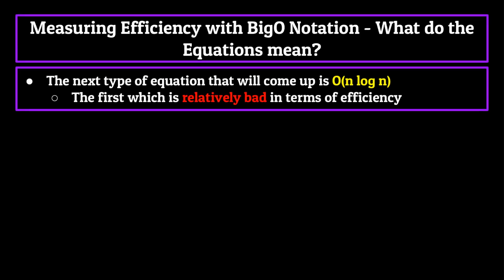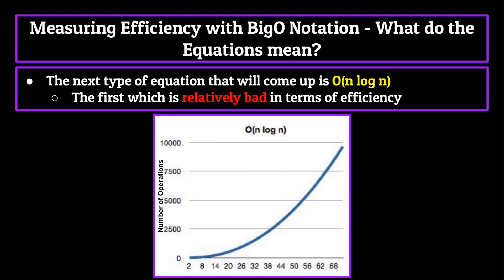Speaking of inefficiency, the next type of equation that will come up is O n log n. This equation is the first that's relatively bad in terms of efficiency. The graph of volume versus operations needed shows a somewhat linear but increasing graph, meaning unlike O log n, it won't be better in terms of efficiency as time goes on.